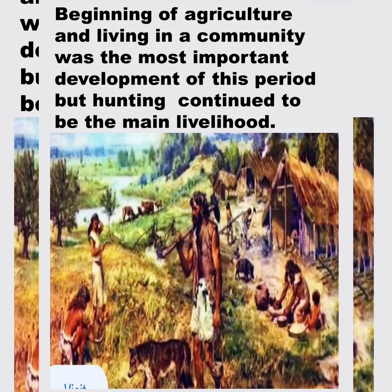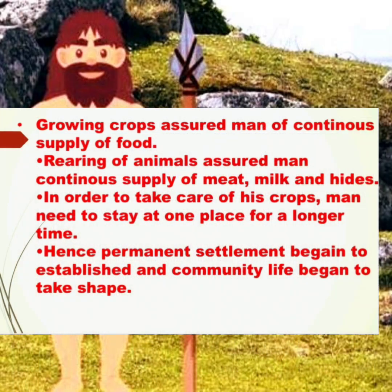The beginning of agriculture and living in a community was the most important development of this period, though hunting continued to be a main livelihood. Growing crops assured man of a continuous supply of food, and rearing of animals assured a continuous supply of meat, milk, and hides. In order to take care of his crops, man needed to stay at one place for a longer time. Hence, permanent settlements began to be established and community life began to take shape.